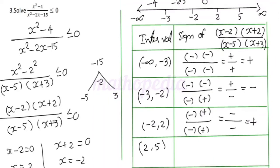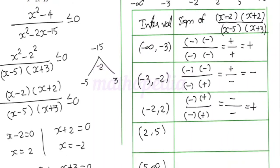The next interval (2, 5) should be negative. Consider x = 3: (3 - 2) = 1, positive; (3 + 2) = 5, positive; (3 - 5) = -2, negative; (3 + 3) = 6, positive. So (+)(+) / (-)(+) = (+)/(-) = negative.